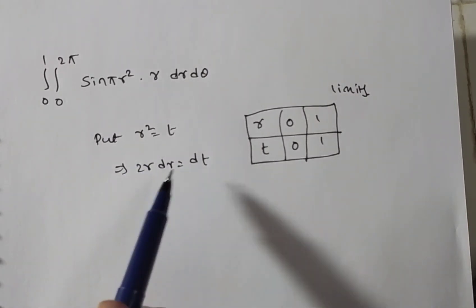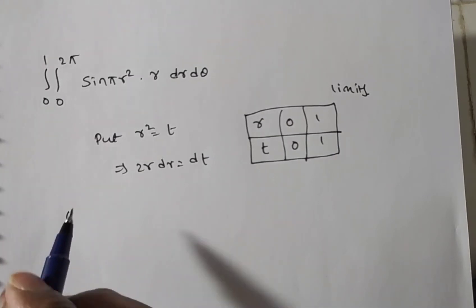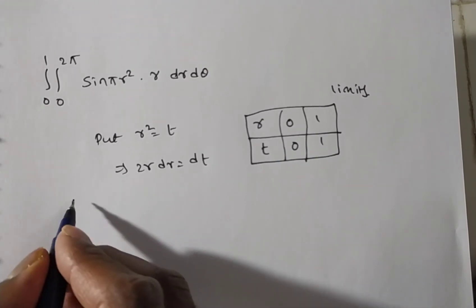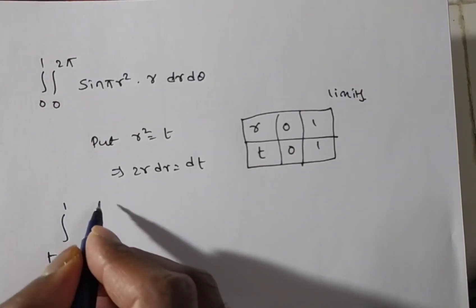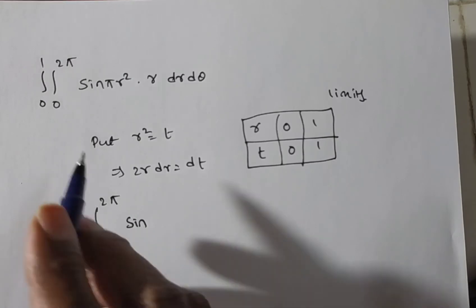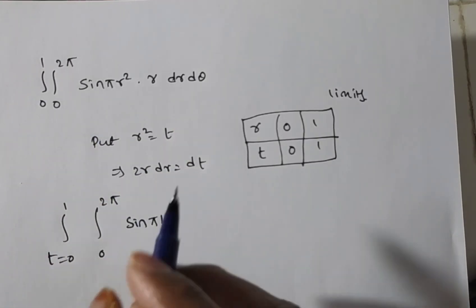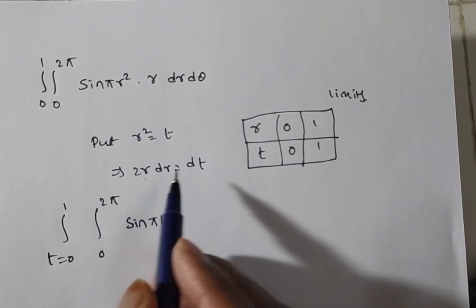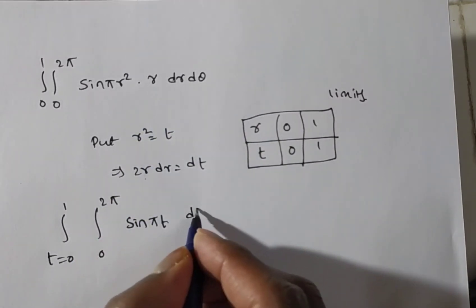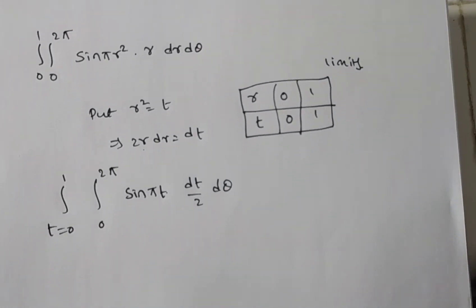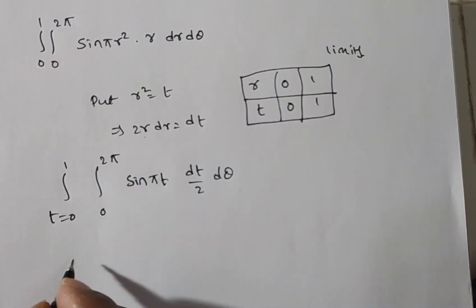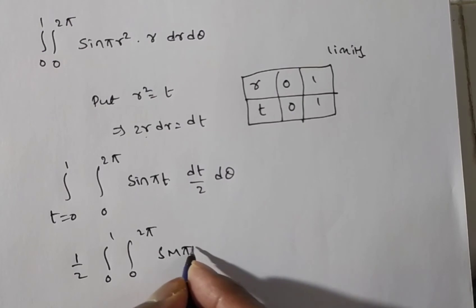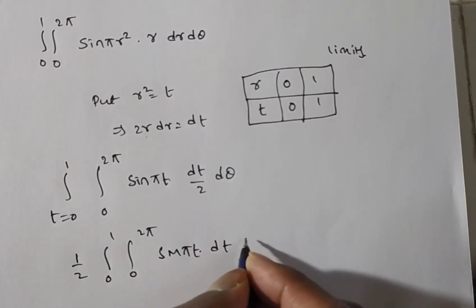Substituting, r from 0 to 1 becomes t from 0 to 1, and θ limits remain 0 to 2π. The integral becomes: (1/2) times integral from 0 to 1, integral from 0 to 2π of sin(πt) dt dθ, where the factor 1/2 comes from r dr = dt/2.